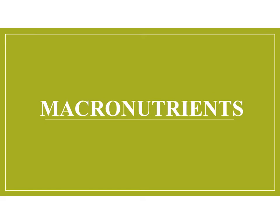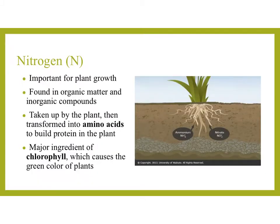Let's first cover the macronutrients — the ones needed in large quantities. First up: nitrogen. Nitrogen is important for plant growth. It's found in organic matter and inorganic compounds. It can be transformed into amino acids, which help build proteins in the plant. The major ingredient of chlorophyll, which produces the green color of plants, is also due to that uptake of nitrogen. So it's very essential for nitrogen to be in the soil for the plant to function correctly.